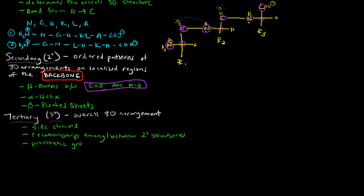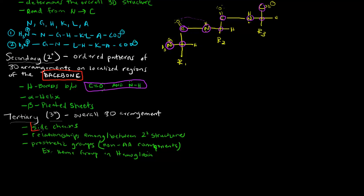Prosthetic groups are simply non-amino acid components of a protein. One quick example is the heme group in hemoglobin, which we'll talk about in a future video. Tertiary structure includes a bunch of different things, but mostly I want you to focus on the side chains — specifically, the interactions between side chains are what we're most concerned with when thinking about tertiary structure.